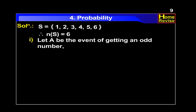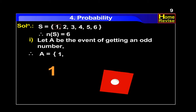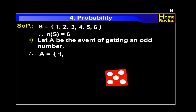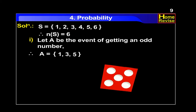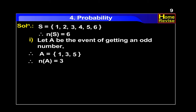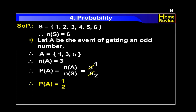Number 1. Let A be the event of getting an odd number. Therefore, A is equal to, in curly brackets: 1, 3, 5. Therefore, n of A is equal to 3. Therefore, probability of A is equal to n of A upon n of S, which is equal to 3 upon 6, which simplifies to 1 upon 2.